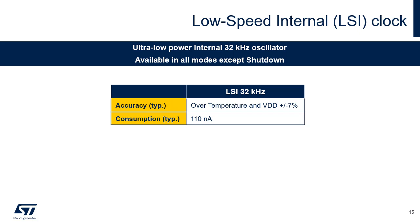STM32C0 devices embed an ultra-low power 32 kHz RC oscillator, which is available in all modes except shutdown. The LSI can be used to clock the RTC and the independent watchdog. The accuracy of the LSI is plus or minus 1.5% over temperature and plus 0.1 minus 0.2% over voltage. The LSI consumption is typically 110 nA. If the independent watchdog (IWDG) is started by either hardware option or software access, the LSI oscillator is forced on and cannot be disabled.